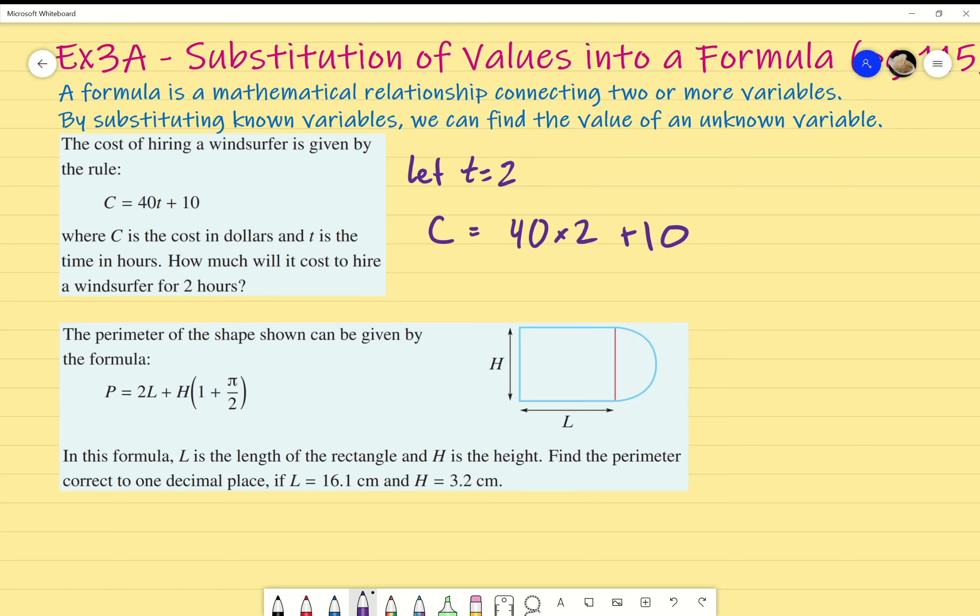So, I can write C equals 40 times 2 plus 10. Now, here's my question. What's the problem with me writing it like this? So, 40 and because it's T, I'm going to replace T with 2 and then plus 10. What's wrong with that? Yeah. Good. 402. Of course, that's not what we're looking for. What do I have to add in between to make it not 402?